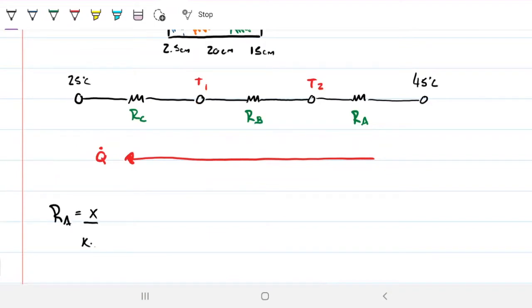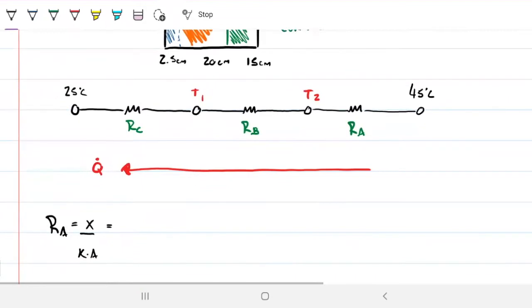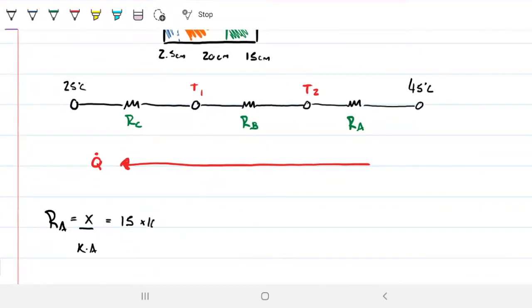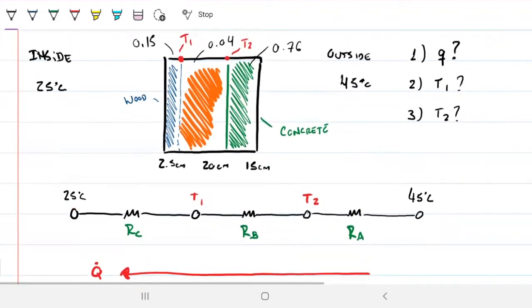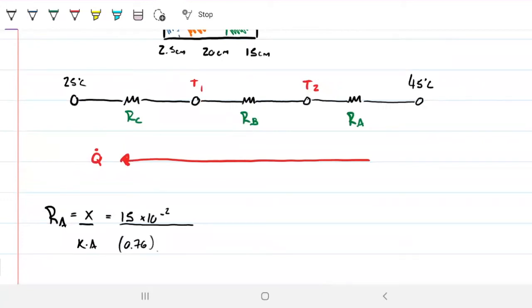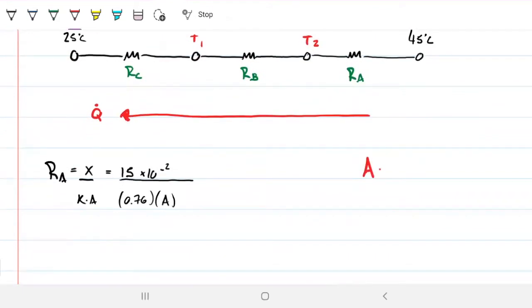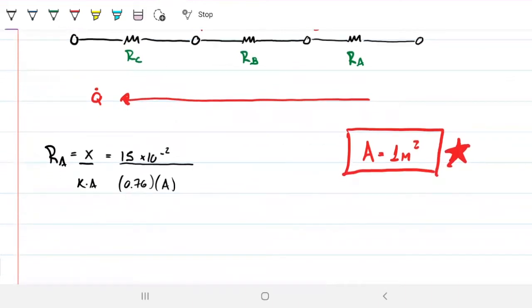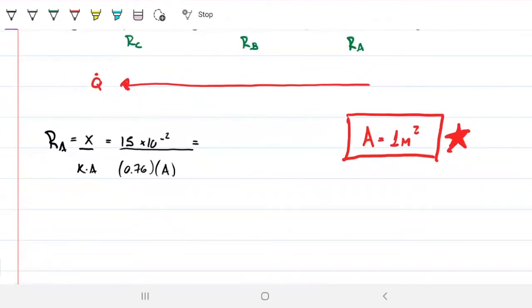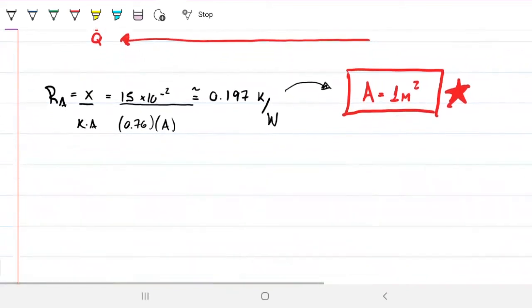So my RA is going to be my X divided by my K in my area. We know our X to be 15 centimeters. So that's 0.15 meters or 15 times 10 to the minus 2 meters. Our K was given as 0.76. So 0.76. And then our area, we don't know. And then we have that same view as before. We can say the area is 1 or we can carry the area with us. It's up to you guys. I'm going to go ahead and say area is 1 meter squared. I'm going to put this in red over here so that I'm reminded of that. This gave me about 0.197. And that would be Kelvin per watts in the units. However, I just need to remind myself that this is actually assuming a 1 meter squared area.